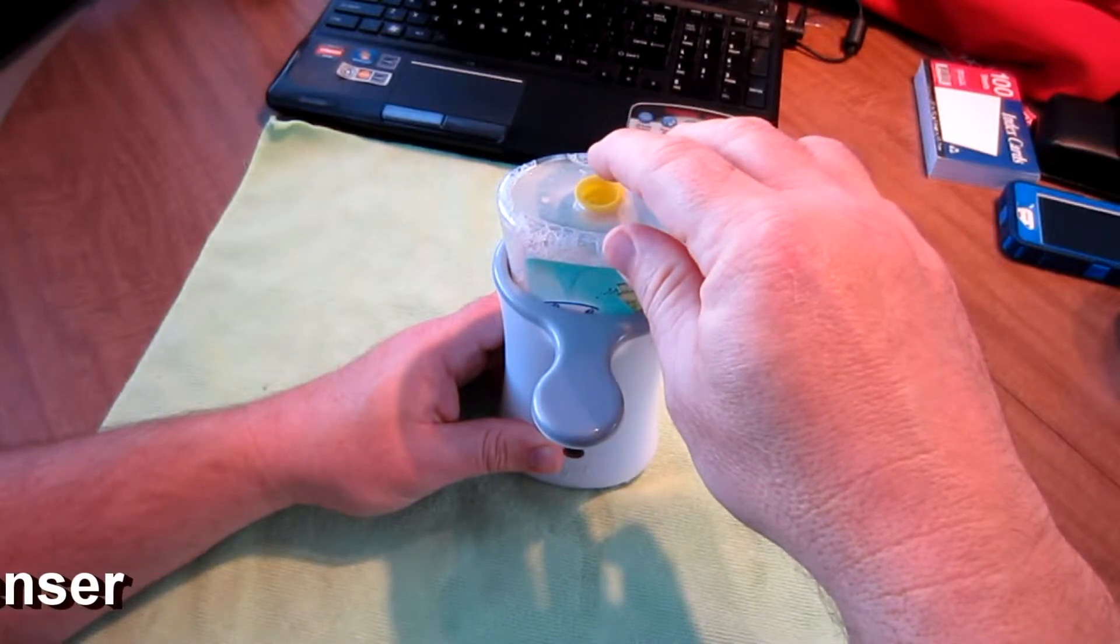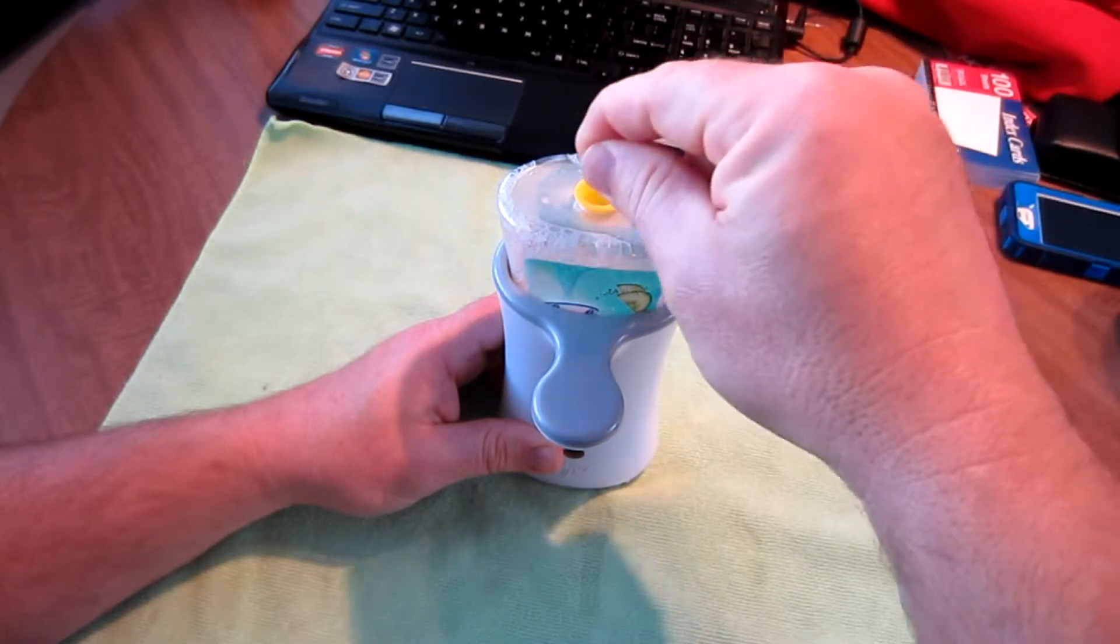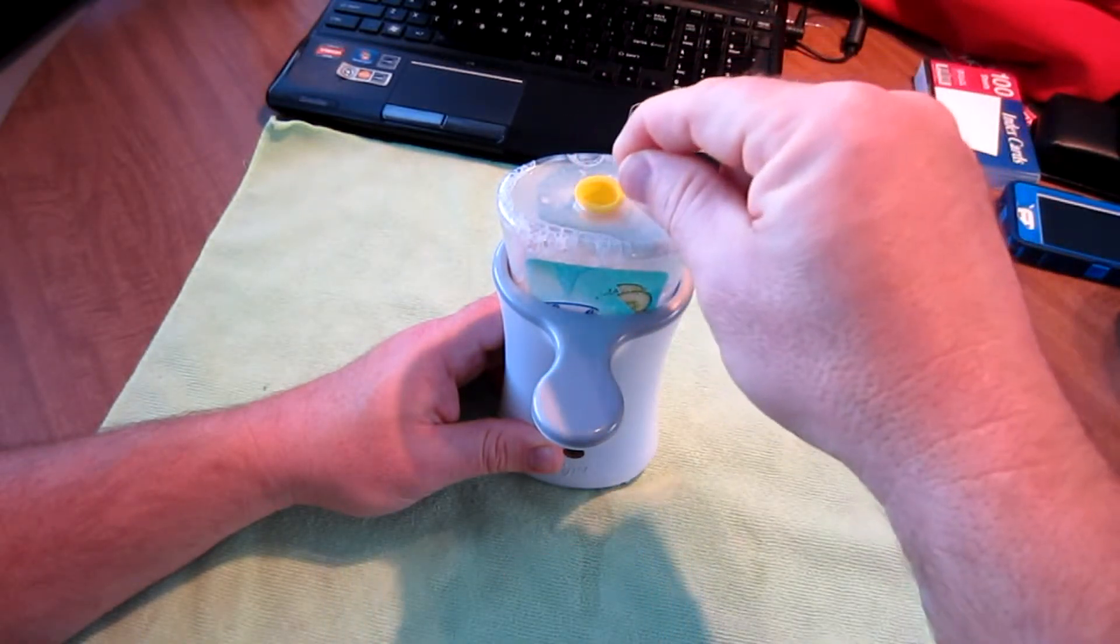Also, you can use a soldering iron and just go ahead and burn the hole and then move the soldering iron around in a circle to open the hole to the desired size.